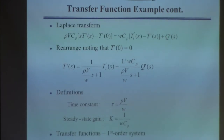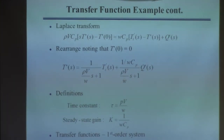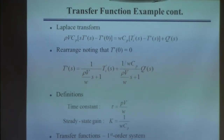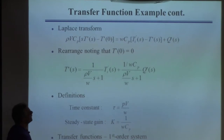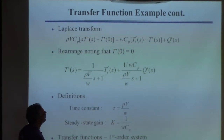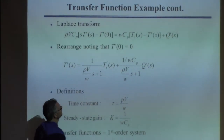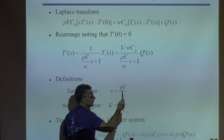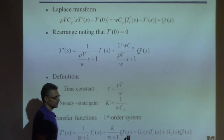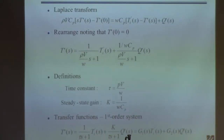The reason this is so convenient to work with deviation variables is that this initial condition term is zero. T-prime of zero equals T of zero minus T-bar, but I told you the system starts off at steady state, which means T-prime of zero is zero. So that term falls out, which is quite convenient. On the right-hand side, every place there was a variable as a function of time, you make it a variable as a function of S.